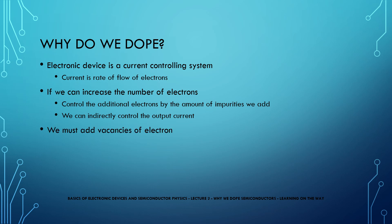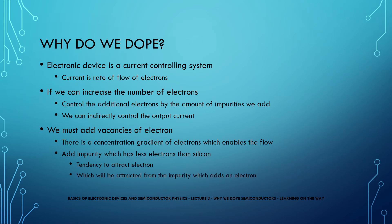But if we are adding electrons, we must add a space for electrons to go to so that there is a proper concentration gradient of electrons which enables the flow. Basically, we add an impurity which has less electrons than silicon which means they will have a tendency to attract electrons which will be attracted from the impurity which gives an additional electron.